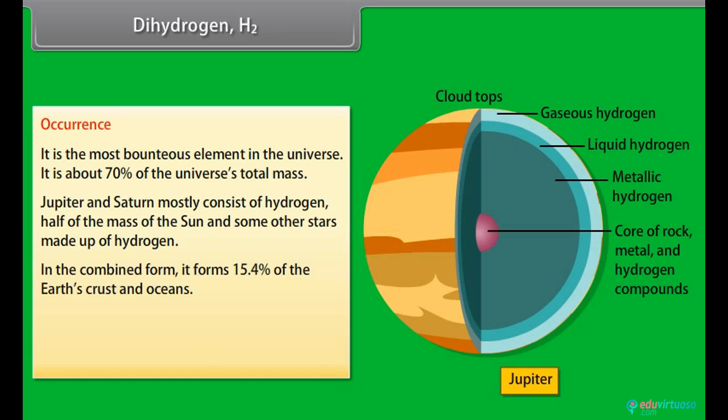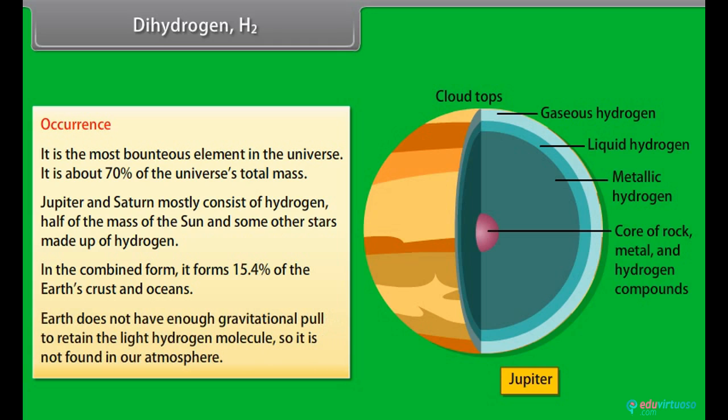In the combined form, it forms 15.4% of the Earth's crust and oceans. Earth does not have enough gravitational pull to retain the light hydrogen molecule, so it is not found in our atmosphere.